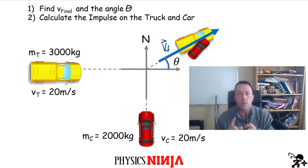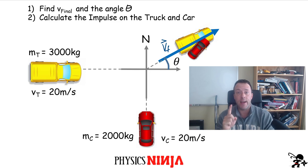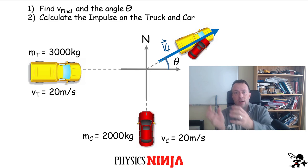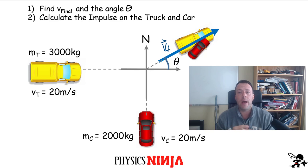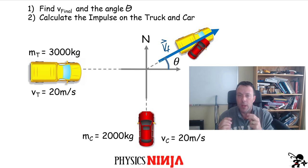I have a couple of questions associated with this problem. First, how do we find this final velocity as a vector? What's the magnitude and what is the direction that the chunk slides off after the collision? In addition to that, we're also going to look at the impulse on the truck and the impulse on the car — again, as a two-dimensional problem.